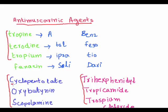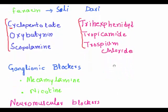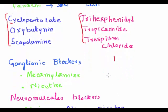COS stands for: C for cyclopentolate, O for oxybutynin, and S for scopolamine. These are the anti-muscarinic agents.